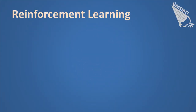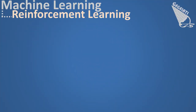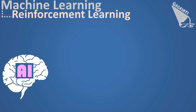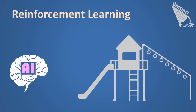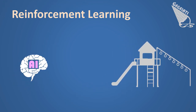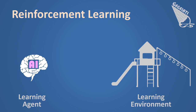Reinforcement learning is one of the many branches of machine learning techniques. In reinforcement learning, an artificial intelligence is placed in a playground and must learn to do something useful all by itself. To teach itself something useful, the artificial intelligence, which is called the learning agent, must interact with a digital playground called the learning environment. The learning agent has the ability to observe the current state of its environment and can interact with it through a set of actions.